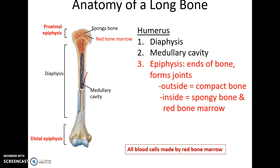There is a proximal epiphysis and a distal epiphysis. These epiphyses have compact bone on the outside and spongy bone on the inside. Between the trabeculae of the spongy bone is red bone marrow.